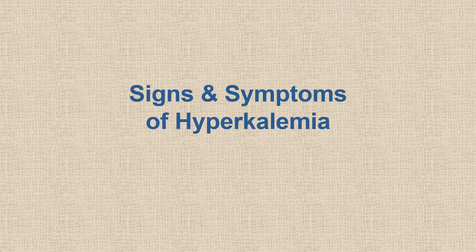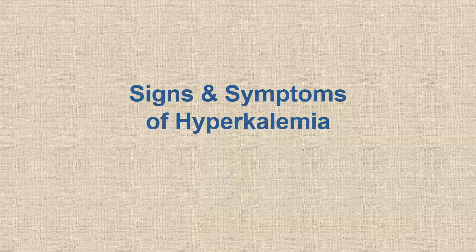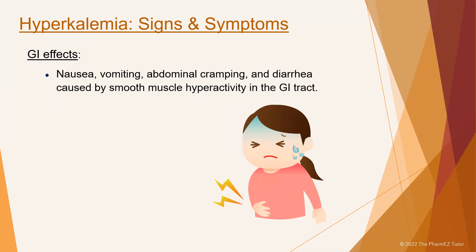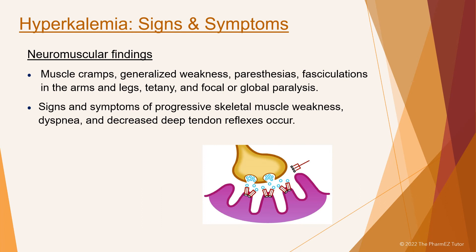The initial signs and symptoms of hyperkalemia involve GI effects: nausea, vomiting, abdominal cramping, and diarrhea caused by smooth muscle hyperactivity in the GI tract. Neuromuscular signs and symptoms then occur, including muscle cramps, generalized weakness, paresthesias, fasciculations in the arms and legs, tetany, and focal or global paralysis. Signs and symptoms of progressive skeletal muscle weakness, dyspnea, and decreased deep tendon reflexes also occur.